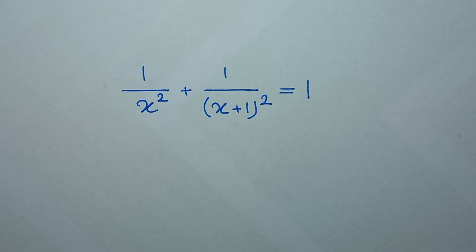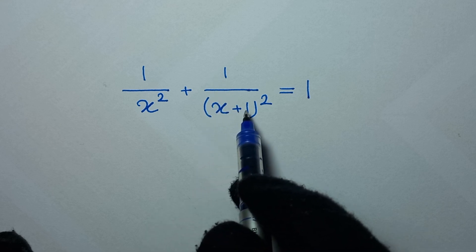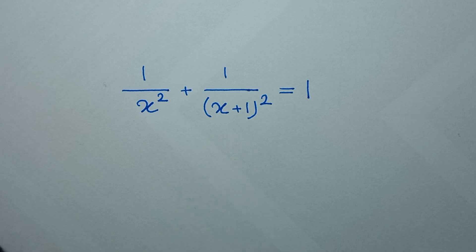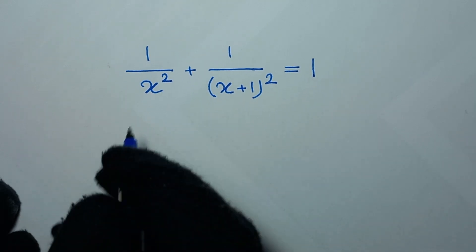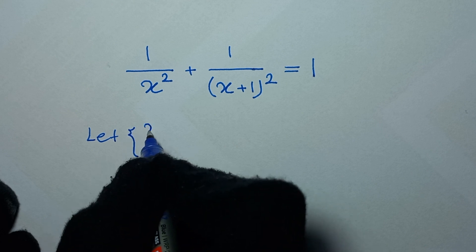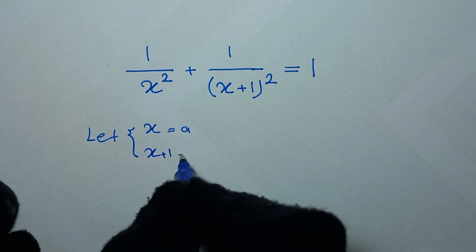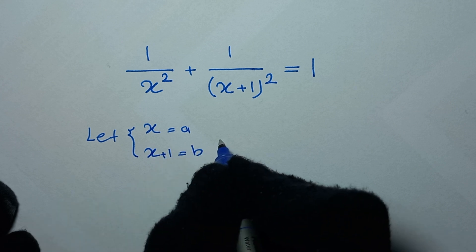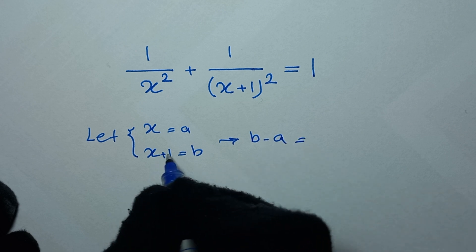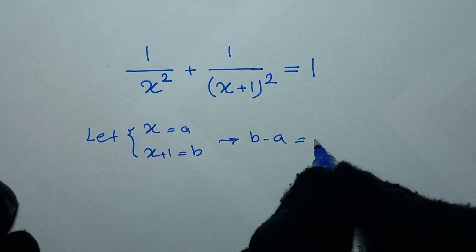Hello my friends, welcome to solve this math problem: 1/x² + 1/(x+1)² = 1, to find the values of x. In the first step, we start by letting x as a and x+1 as b. So from here, b minus a equals (x+1) minus x, which equals 1.